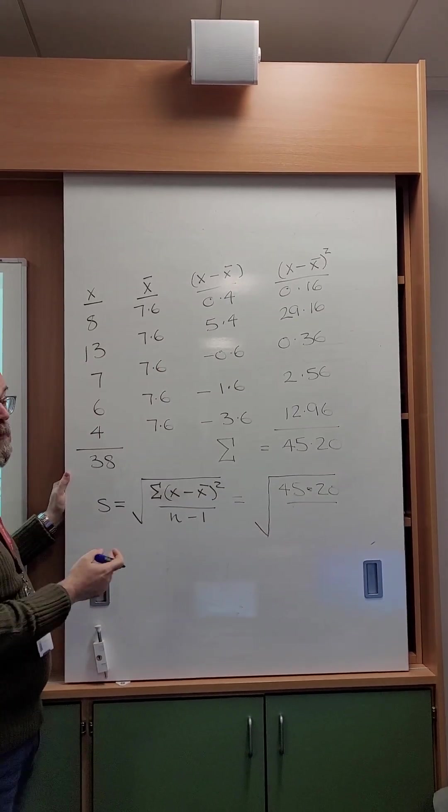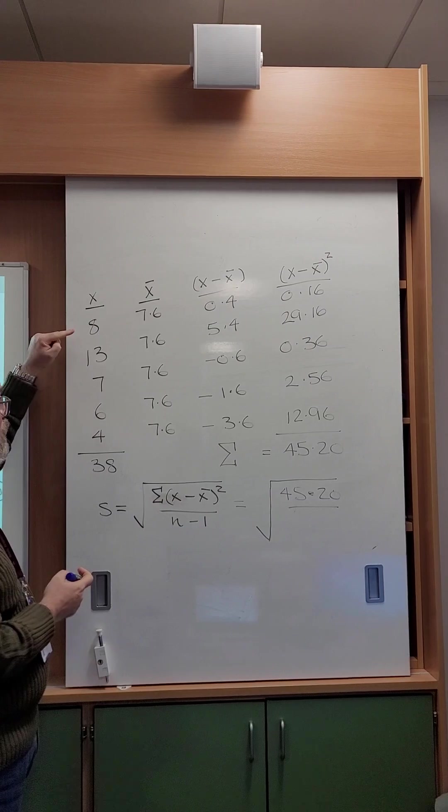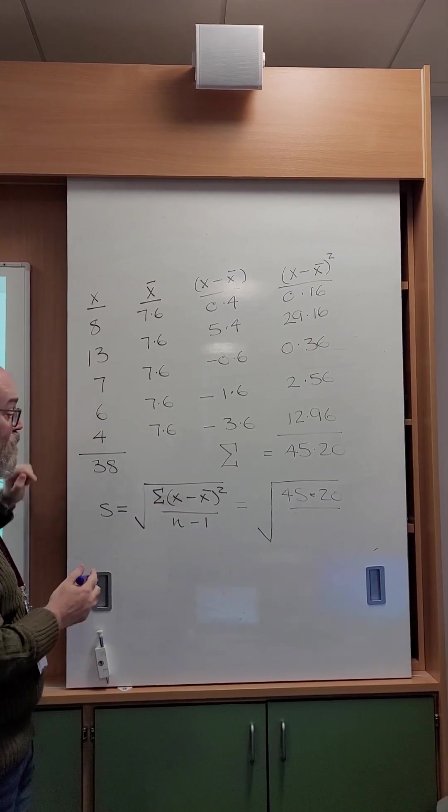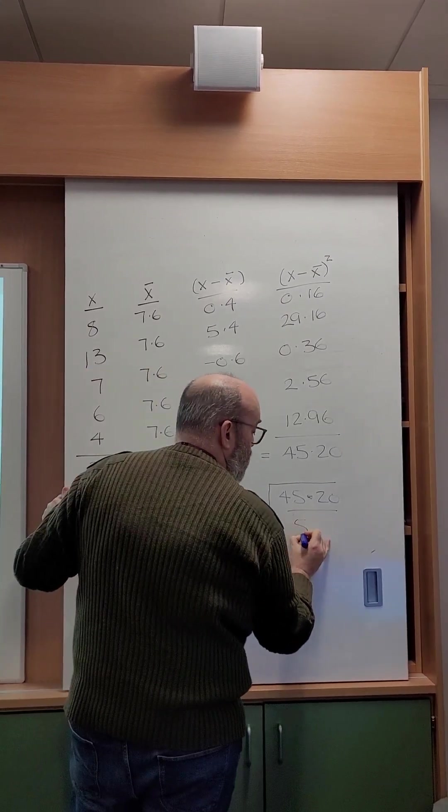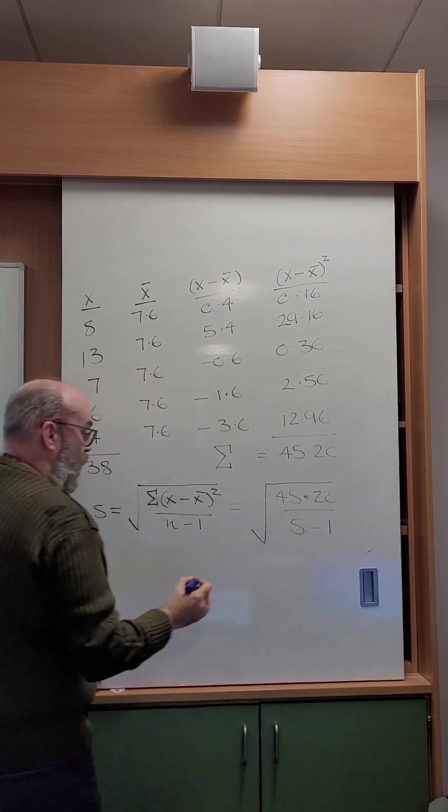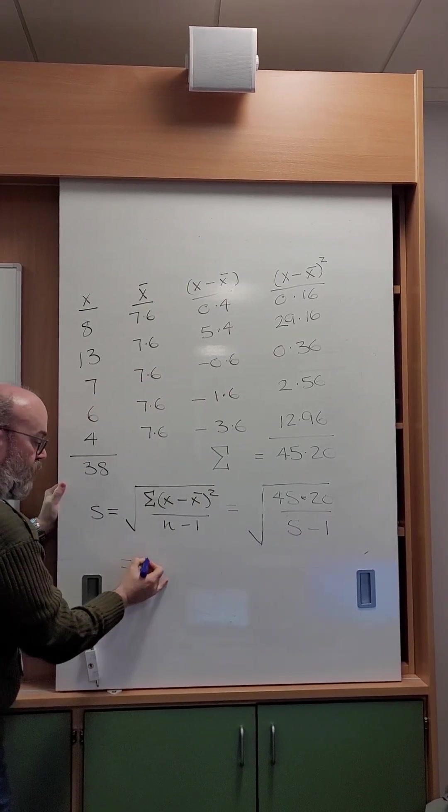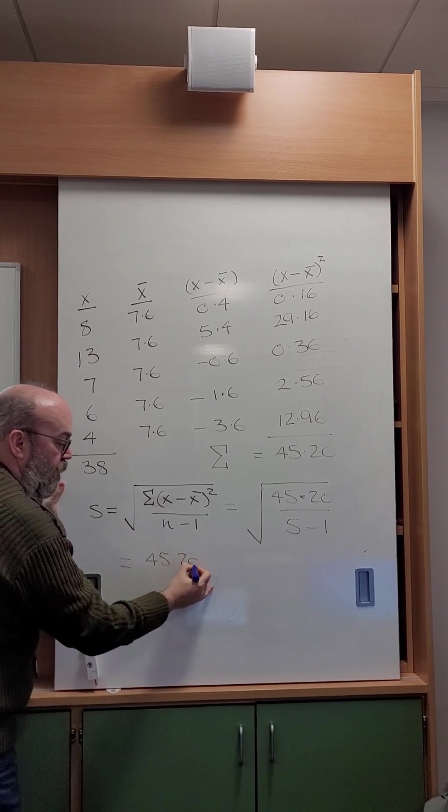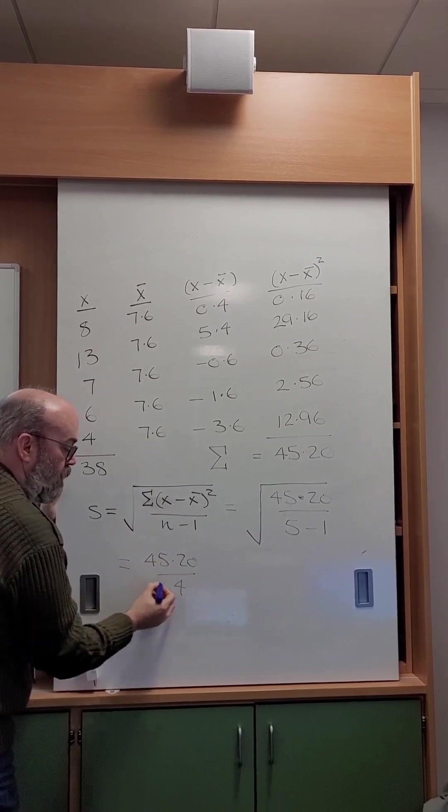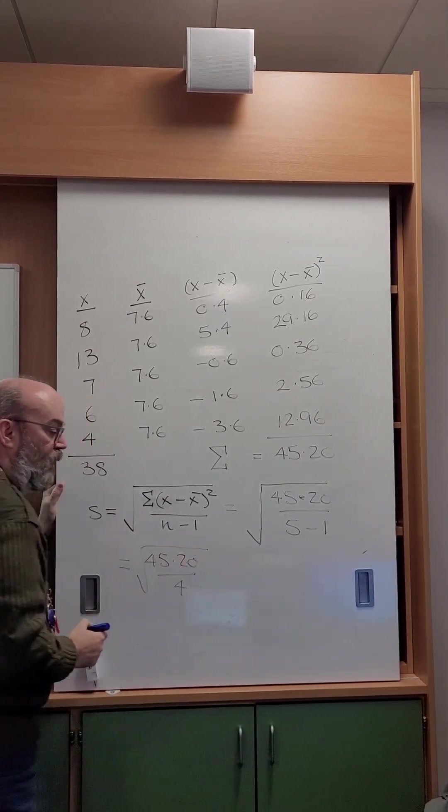What is N? Well, N is the number of data items that I'm dealing with. So in this case, 1, 2, 3, 4, 5. So that becomes 5 take away 1. In other words, that's going to give me 45.20 divided by 4, and take the square root of all of that.